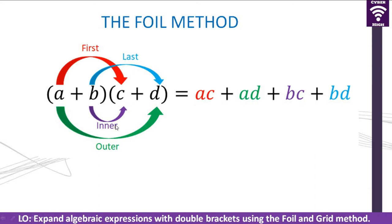Then the Inner is B times C — whatever letter or number is represented by B and C, you multiply and get BC. And finally, you multiply the Last, which is B times D, and then you get BD. Once you have these four products, you simplify all the terms that can be simplified.